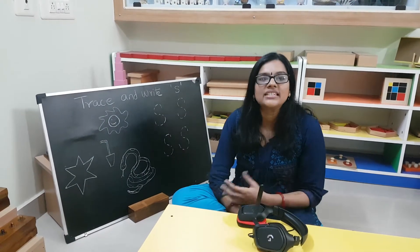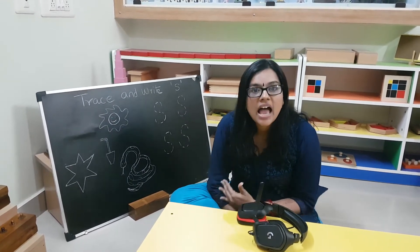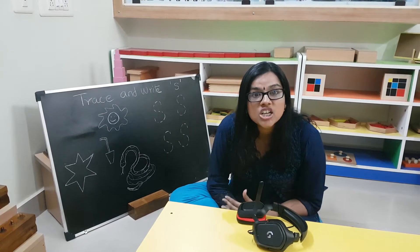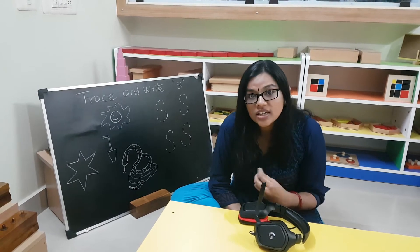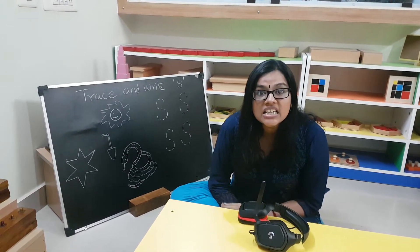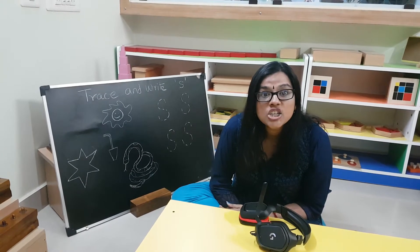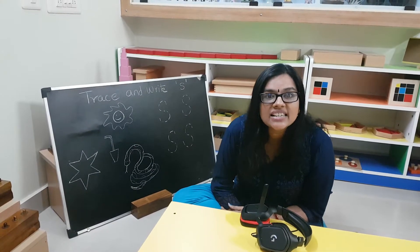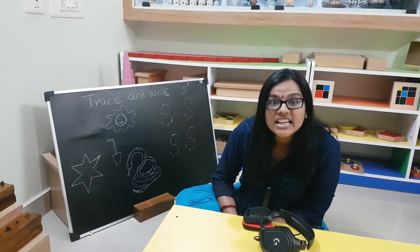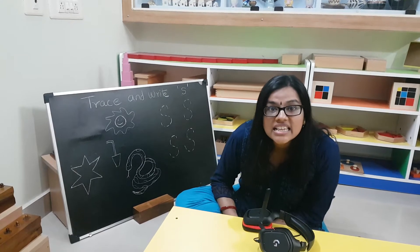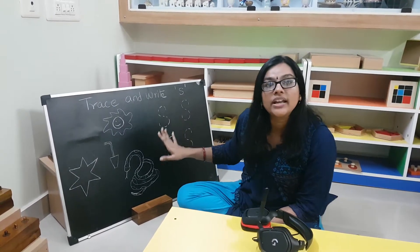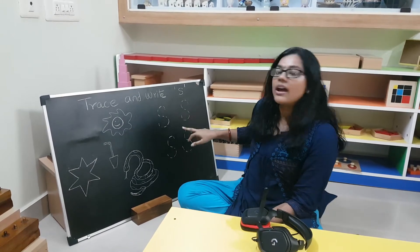Now for an example, we'll take this sentence: 'A snake saw a soup spoon.' Are you able to hear the 'ss' sound? Snake, saw, soup, spoon — that's the sound. It has to be pronounced as 'ss'. The sound is 'ss'. Knowing about the sound, we'll go ahead and trace and write 'ss'.